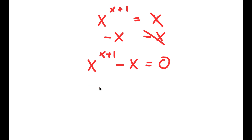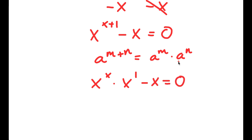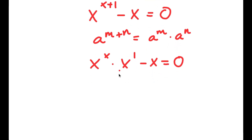If I have something in the form a to the power of m plus n, this is equal to a to the power of m times a to the power of n. So x to the power of x plus 1 is equal to x to the power of x times x to the power of 1. This minus x equals 0. Factoring out x gives x times (x to the power of x minus 1) is equal to 0.